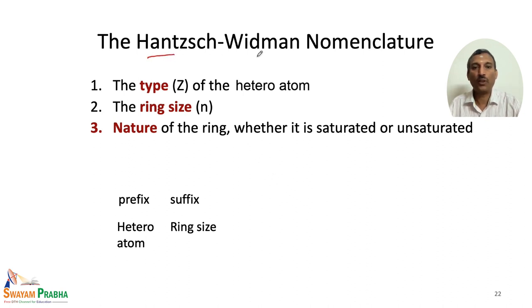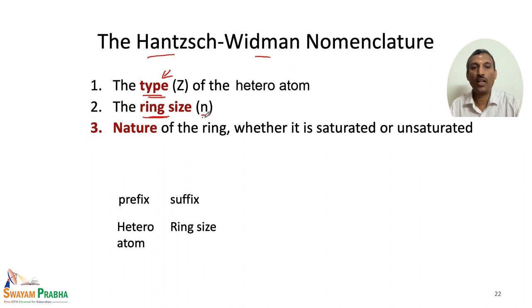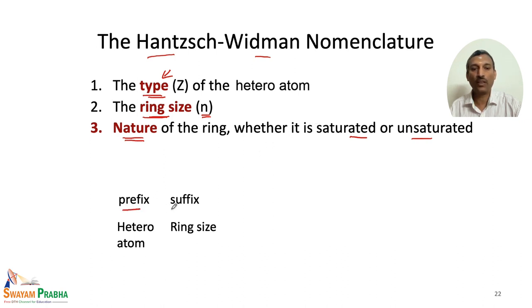According to the Hans Widmann nomenclature rule, we have three major rules to remember. One is the type of the heteroatom included in the ring. The second is the ring size — the number of atoms. The third is the nature of the ring, whether it is saturated or unsaturated. These are the three major rules for naming heterocyclic compounds.